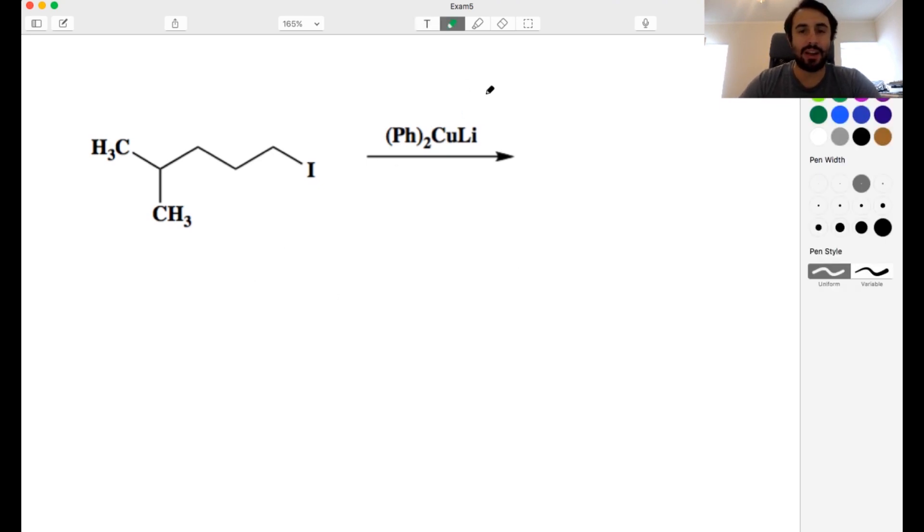So we've got an organocuprate here. We do have to remember what that is. That would be this copper atom, this copper anion, covalently bound to these two alkyl groups, and then the lithium ion is the counter ion to the copper anion. So what this is is a source of alkyl nucleophile.